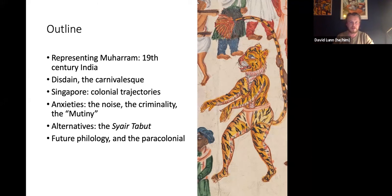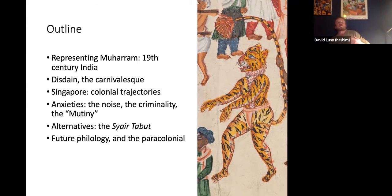We'll be thinking about how recruitment to colonial military powers influenced culture in different parts of the Malay Peninsula. We'll think about colonial anxieties — noise, criminality, the idea of secret societies, and the so-called mutiny of 1857. Then we'll think about alternative forms of evidence, particularly a 19th century Malay poem called the Syair Tabut — the poem of the tomb effigies — and ideas from Sheldon Pollock's future philology and Stephanie Newell's concept of the paracolonial.